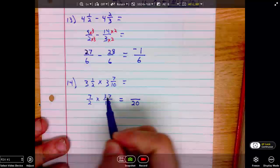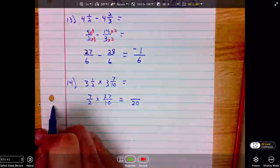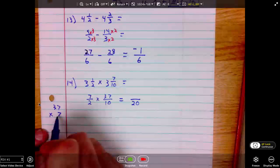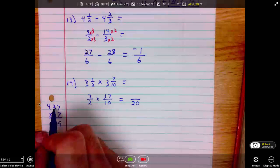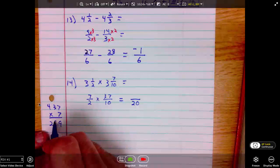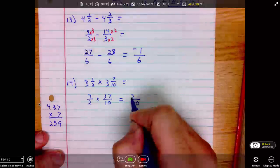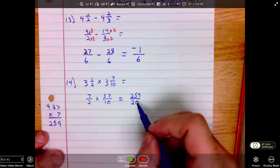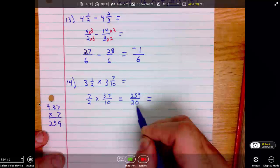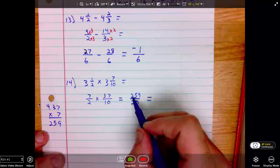Now 7 times 37 coming to our scratch paper. 7 times 7 is 49. Carry my 4. 7 times 3 is 21 plus 4 is 25. 259. Question. How many times will 20 go into 259? Well, 20 will go into 200, 10 times. 220, 11. 240, 12 times. 12.